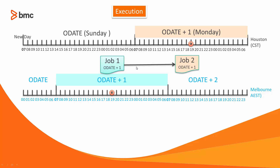Let's look at a real use case. Assuming your New Day is running at 7 a.m. in Houston Central Standard Time, you are a global organization that has business both in Melbourne, Australia and in Houston, Texas. At the end of the workday, jobs are scheduled to run to close the day's activities. The first job is scheduled to run at 1900 Melbourne time, and the second job needs to follow at 1900 Houston time. Both jobs close the business activities for today's workday.